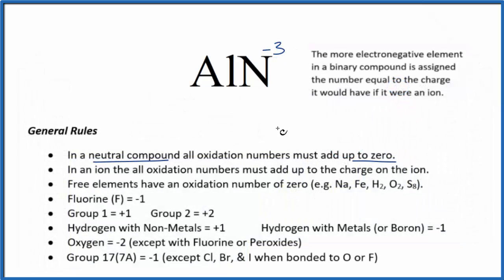Since all of this has to add up to zero, since we have a neutral compound, the aluminum has to be plus three.